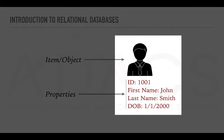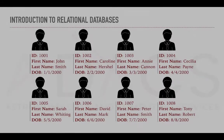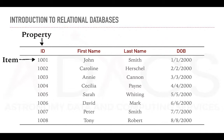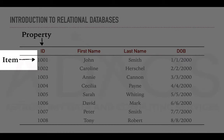Here for example, our object would be a student, and the properties are related to the student. For example, a student has an identification number, a first and a last name, and also a date of birth. The power behind a database is to keep track of a large number of objects. Here we have 8 different students with their own properties. To keep track of many objects, a database uses tables. In a table, the different columns correspond to the properties of our data, and the rows correspond to the different items.